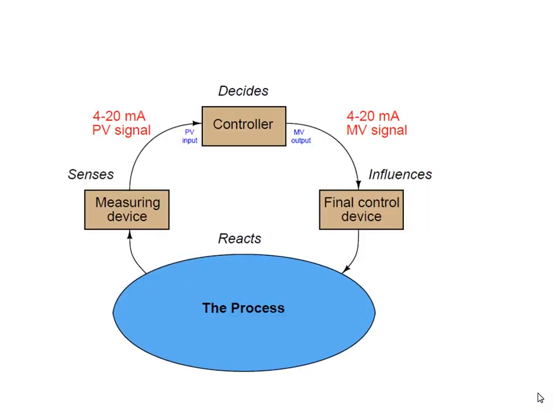In the process, the process variable is measured by the measuring device and then it sends the signal to the controller. The controller decides and gives the manipulating variable signal to the final control device, which adjusts the manipulating variable in such a way that the process variable reaches the set point.